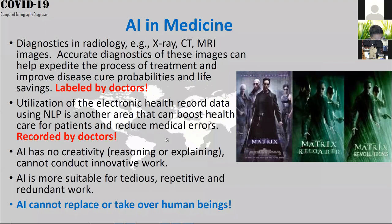An important point is that AI has no creativity. It cannot explain the mechanism of the underlying structure. Machine learning is fundamentally based on training, validation, and testing — prediction aimed at matching the ground truth. This is what people call a black box: it does not give any explanation about the underlying mechanism.